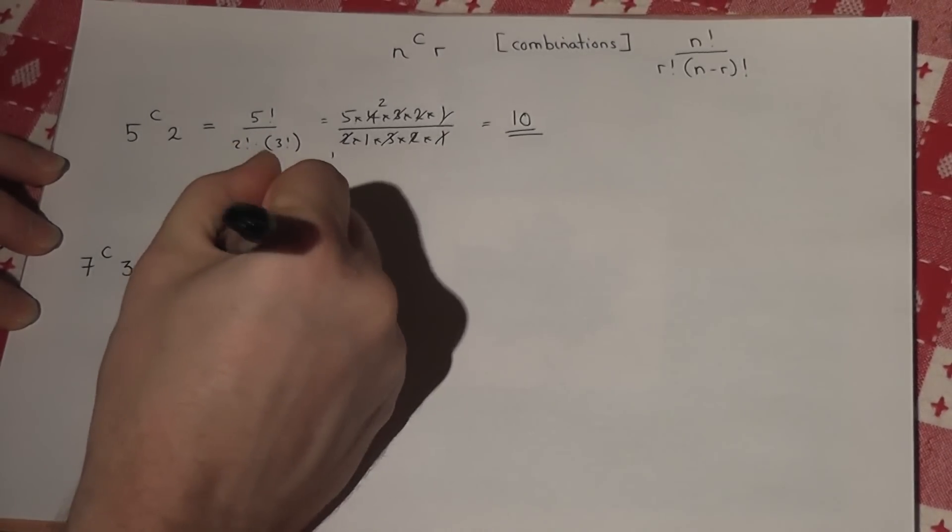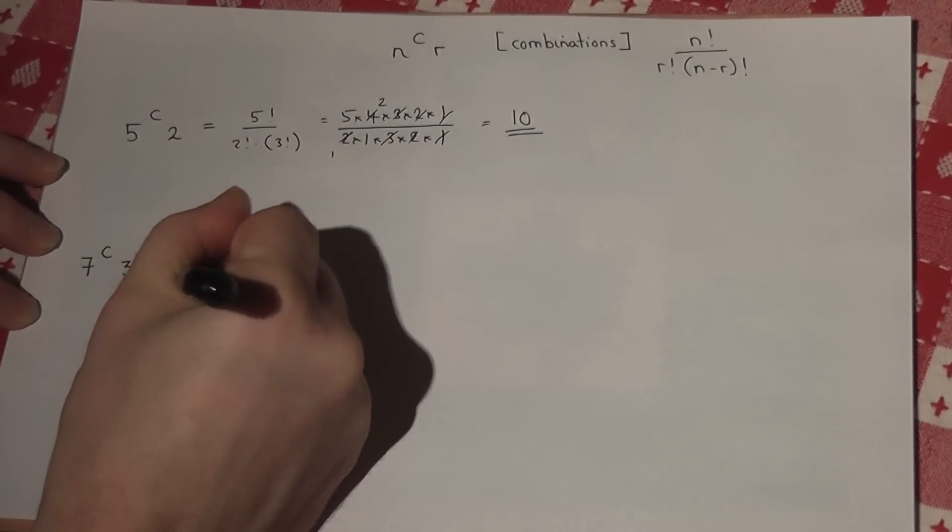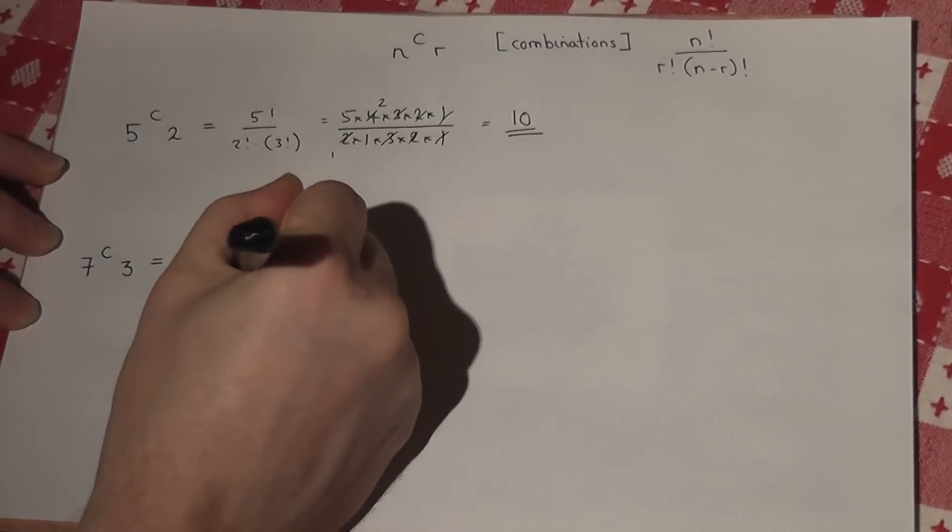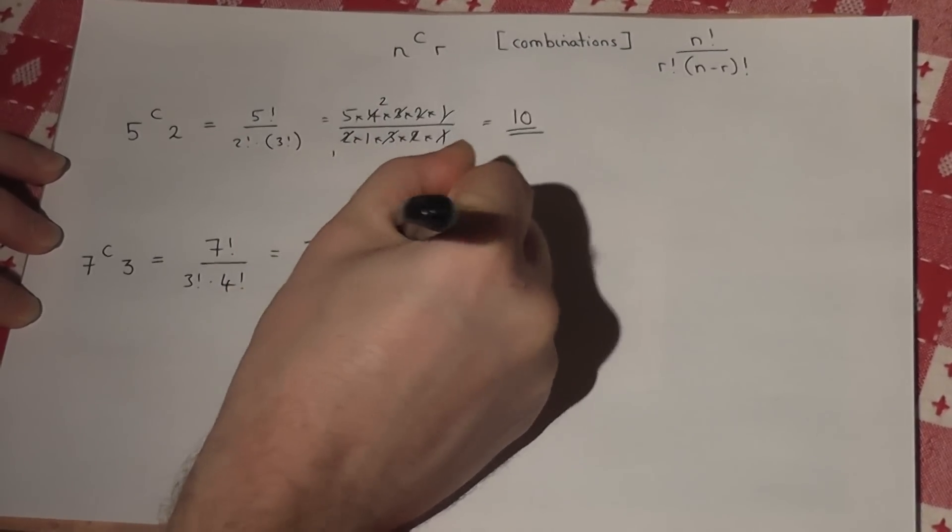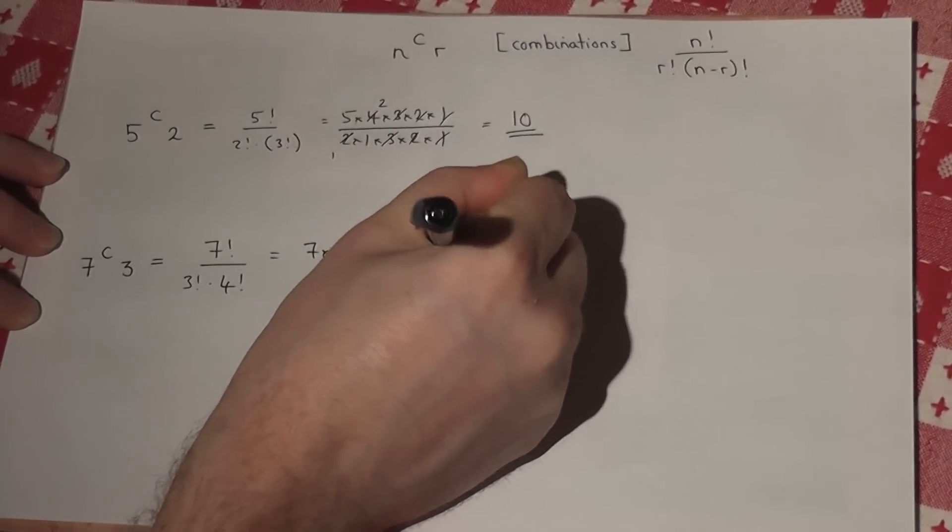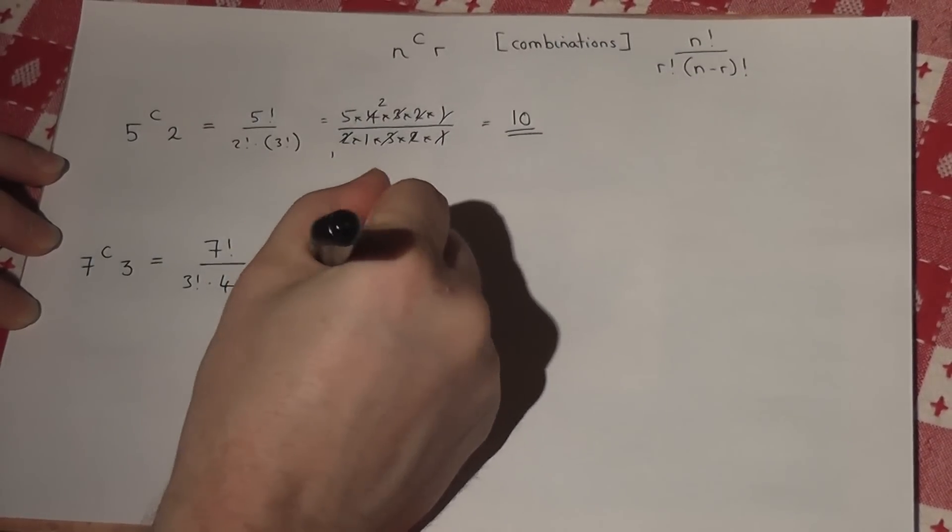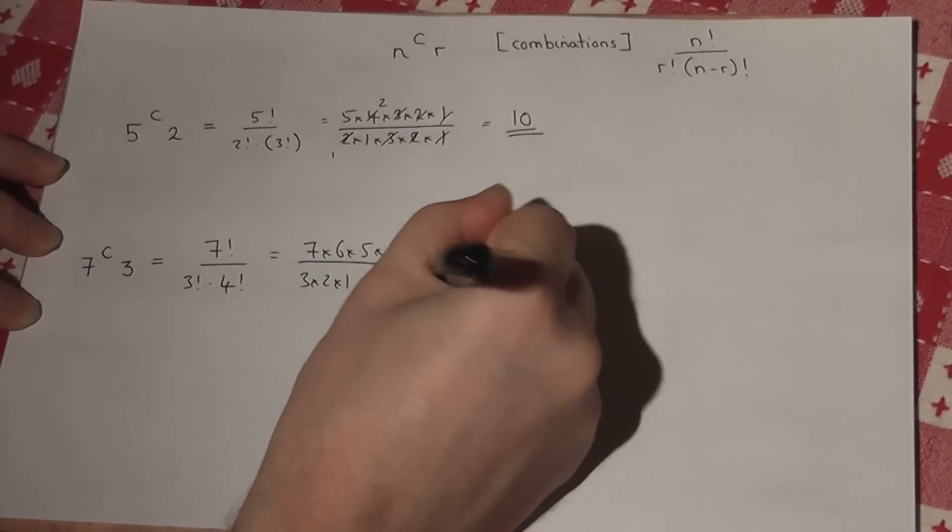7C3, that just means 7 factorial over 3 factorial times by 7 take 3, which is 4 factorial. So that's 7 times 6 times 5 times 4 times 3 times 2 times 1, all over 3 times 2 times 1, and 4 times 3 times 2 times 1.